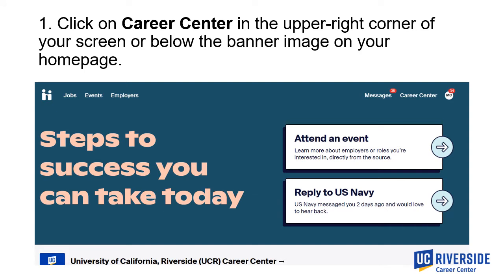The first step is to log into your Handshake account. Once you are logged in, you'll be directed to the home page. In order to access appointments, click on the 'Career Center' text in the upper right corner of your screen, or you can click on 'University of California Riverside UCR Career Center' below the banner image on your home page.